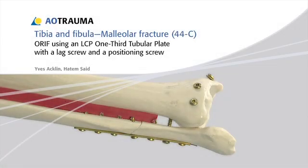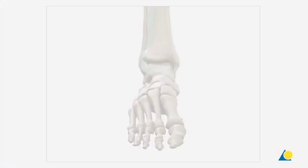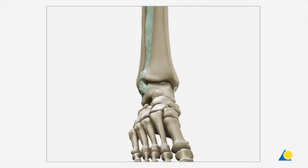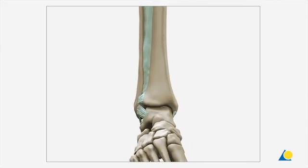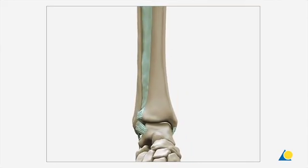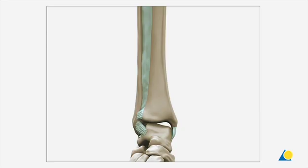In this presentation, a type C maleolar fracture will be treated using open reduction and internal fixation. A type C maleolar fracture occurs when the foot is in pronation and an external rotational force is applied to the ankle joint, which leads to a cascade of injuries.